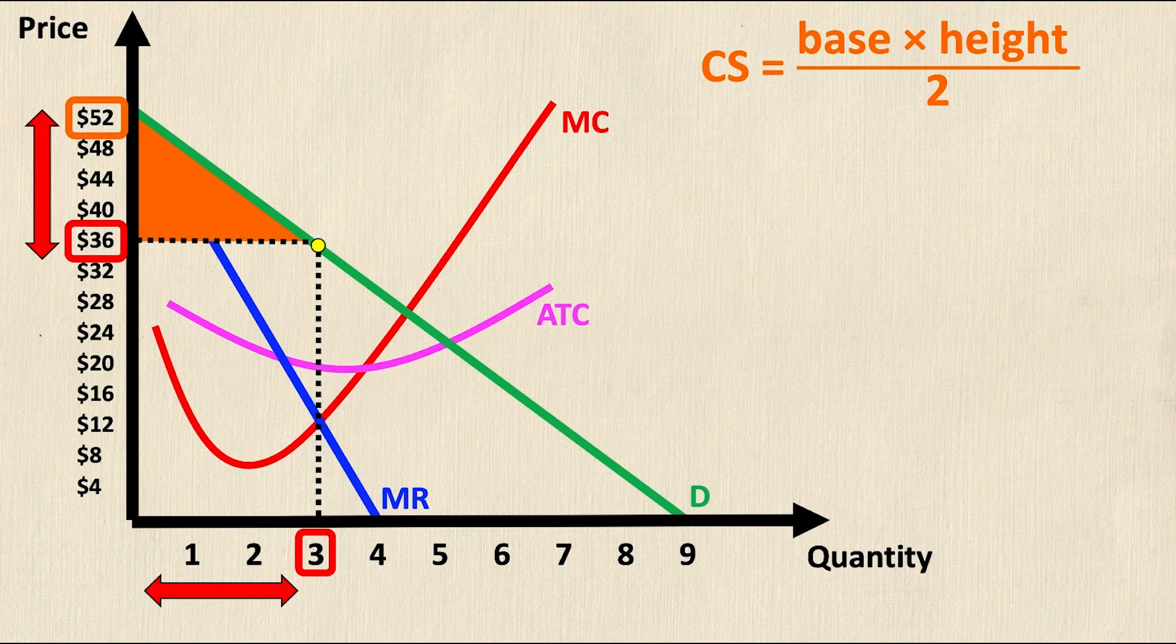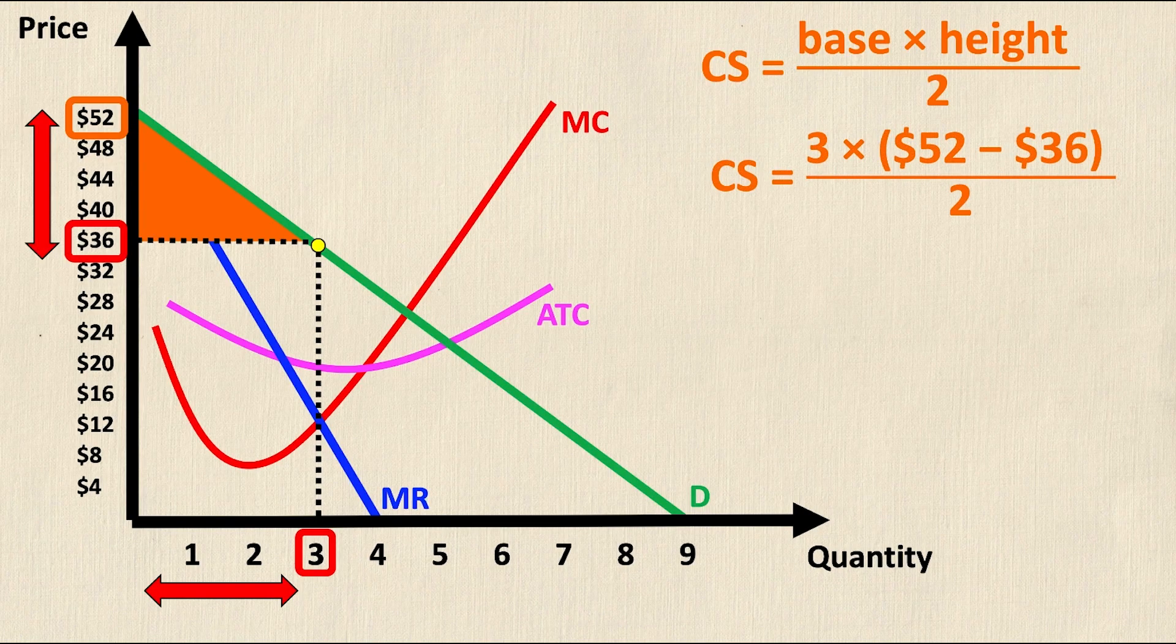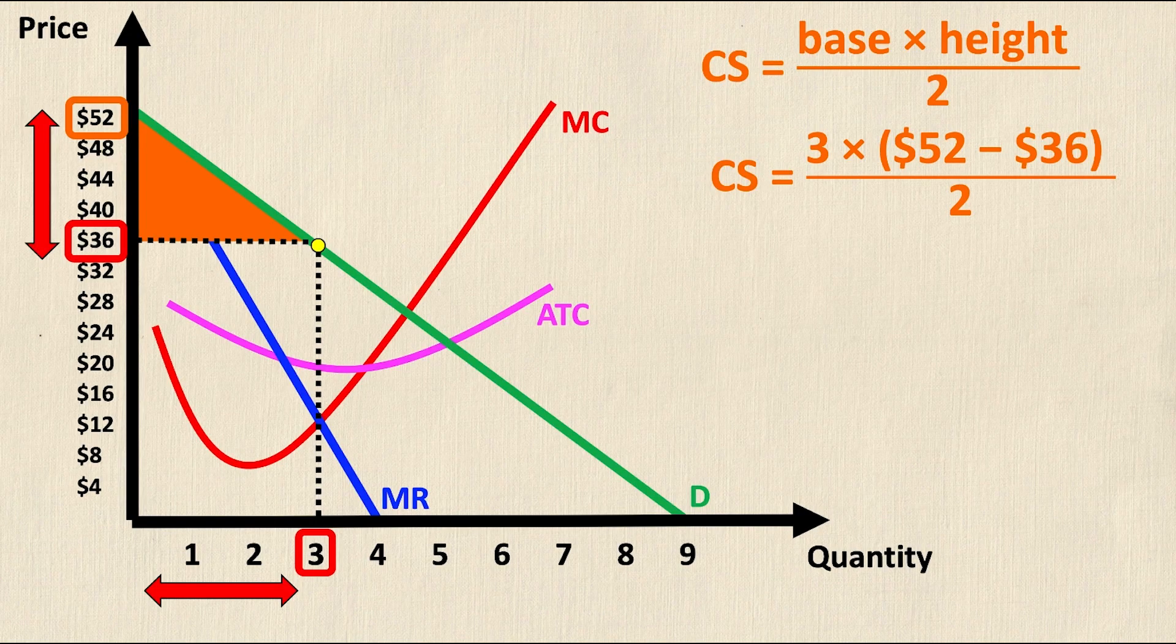So we can write this in the formula as consumer surplus equals 3, the base of the triangle, times $52 minus $36, which is the height of the triangle, divided by 2. Upon simplifying this we get 3 times $16 divided by 2.